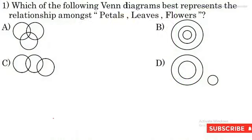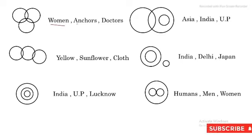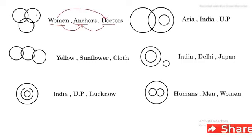Before starting the questions, let us understand the Venn diagram in detail. This is the first Venn diagram. Look — women, anchors, doctors. Women can also be anchors, anchors can also be doctors, and women can also be doctors. So this is the right Venn diagram for this type of relationship — three overlapping circles.